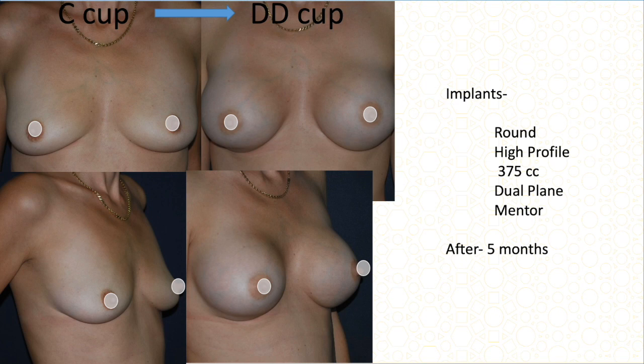Another C cup patient with slightly more sagging — grade one sagging but good elasticity. To fill it up and lift the nipple without a formal breast lift, I chose a 375 cc high-profile dual-plane implant. She achieved from C cup to double D cup, and this is a pretty long-lasting result.